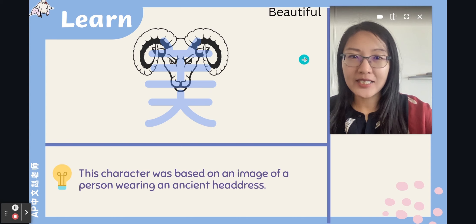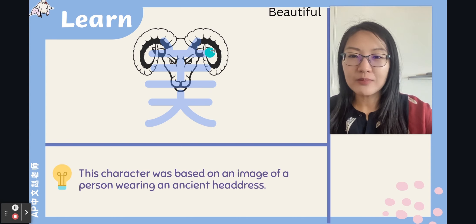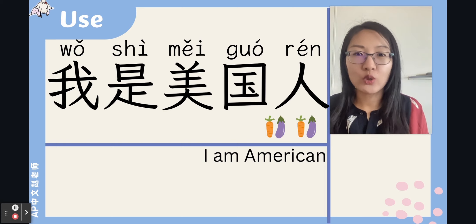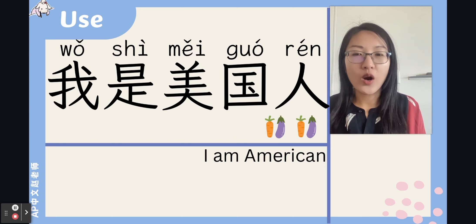The character 美 means beautiful. It was based on the image of a person wearing an ancient headdress — there's a sheep on the top and the person figure on the bottom. 美国 is a top-bottom structure. Let's write this character together. 我是美国人 — I am American.